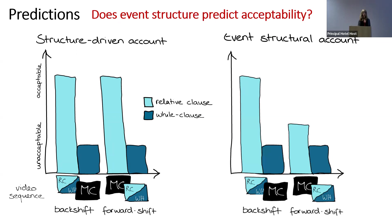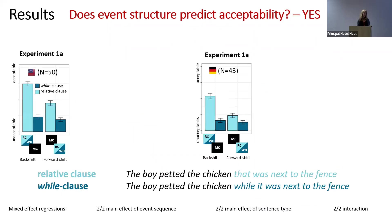From an event structural account, forward shifts should be significantly less acceptable than backshifts. While these predictions show raw data, we also ran statistical analyses using mixed-effects models and planned pairwise comparisons. And this is what we found in two experiments with native English and native German speakers: the pattern of results looks exactly as predicted by the event structural account.